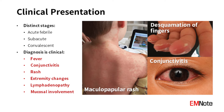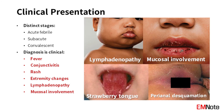Kawasaki disease progresses through distinct stages: acute febrile, subacute, and convalescent. Key clinical features include fever, conjunctivitis, rash, extremity changes, lymphadenopathy, and mucosal involvement.